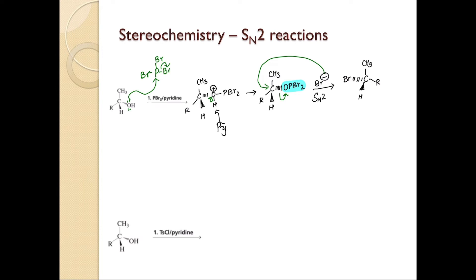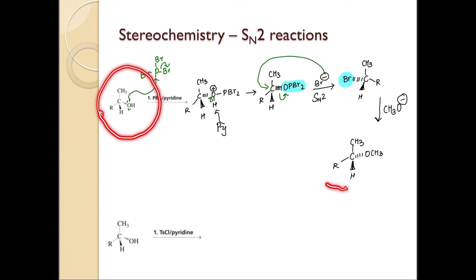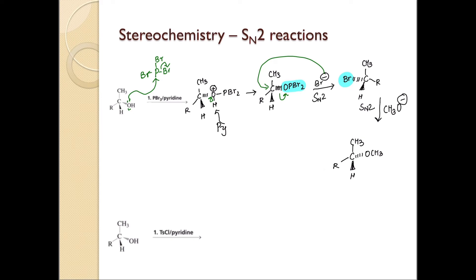This is where your first SN2 reaction happens. Now in the next reaction, you have to react it with CH3O⁻, which is again a nucleophile that needs to go and attack in a direction opposite to that of the leaving group — bromine is now the leaving group. The nucleophile attacks the carbon in that direction and gives you the inverted configuration. So whatever configuration you started with, you're going to have in the final product, because there were two SN2 reactions: the first SN2 gives an inversion, and the second SN2 gives another inversion, so the final compound has exactly the same configuration as the starting material.